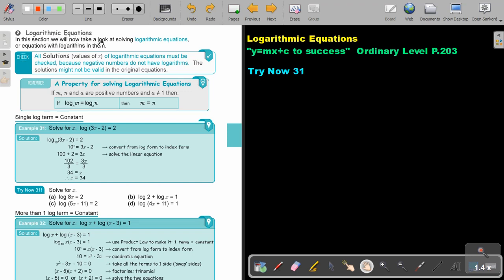In this section we will take a look at solving logarithmic equations or equations with logarithms in them. All solutions of logarithmic equations must be checked because negative numbers do not have logarithms. The solutions might not be valid in the original equation. Very important. You have to check the answers.